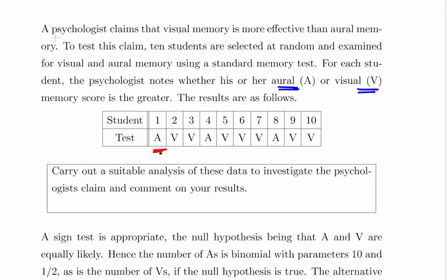So we have three who are classified as A which means that their aural score is better than their visual score. And we have seven whose visual score was better than their aural score so we are classifying them as V.